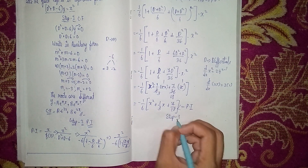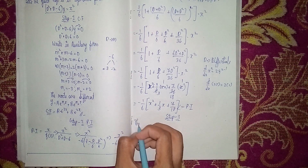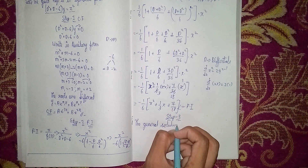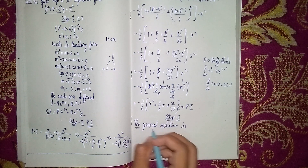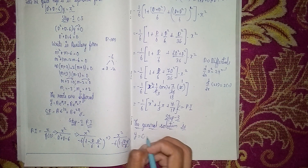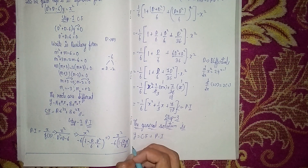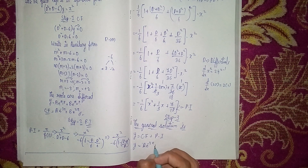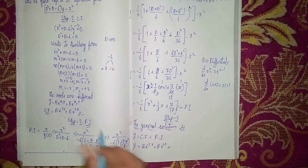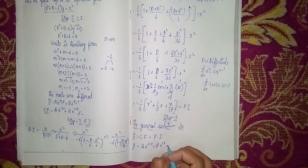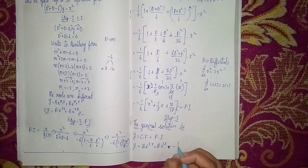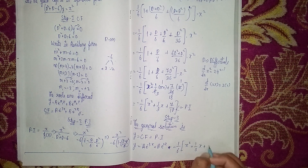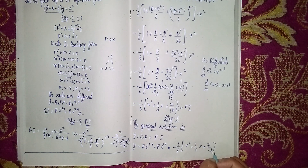Step 3: The general solution is y = complementary function + particular integral. So y = A·e^(-3x) + B·e^(2x) - (1/6)·[x² + (1/3)x + 7/18]. This is our general solution.